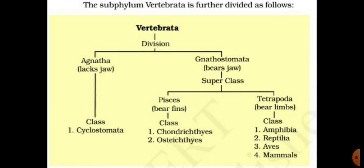Hello friends, good morning. Today starts the classification of the chordates. We have already studied the classification of the non-chordates, as the animal kingdom can be classified into two groups: non-chordate and chordate. The non-chordate was already studied in BC part one, semester one, which includes 10 phyla from Protozoa up to Hemichordates. Now in second year, semester three, we study the classification of the chordates.